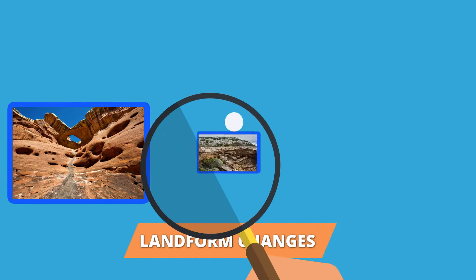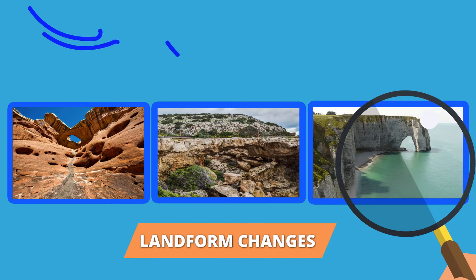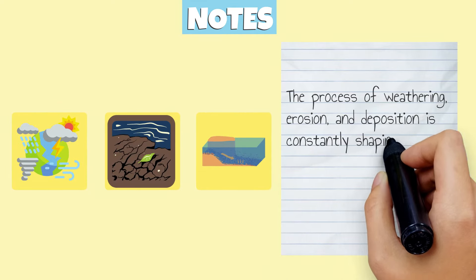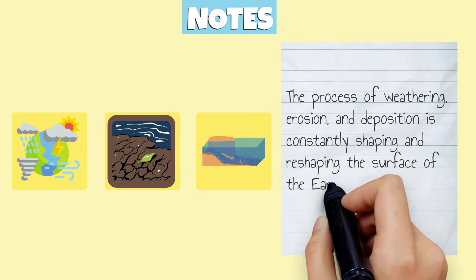This can help identify and track changes in landforms and other features caused by erosion. Let's review what we just learned. The process of weathering, erosion, and deposition is constantly shaping and reshaping the surface of the Earth.